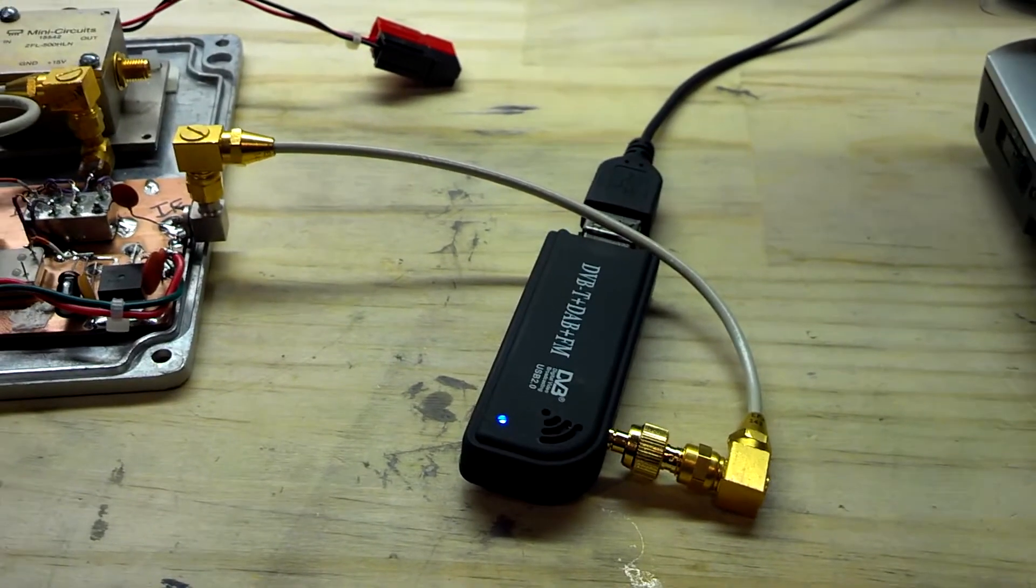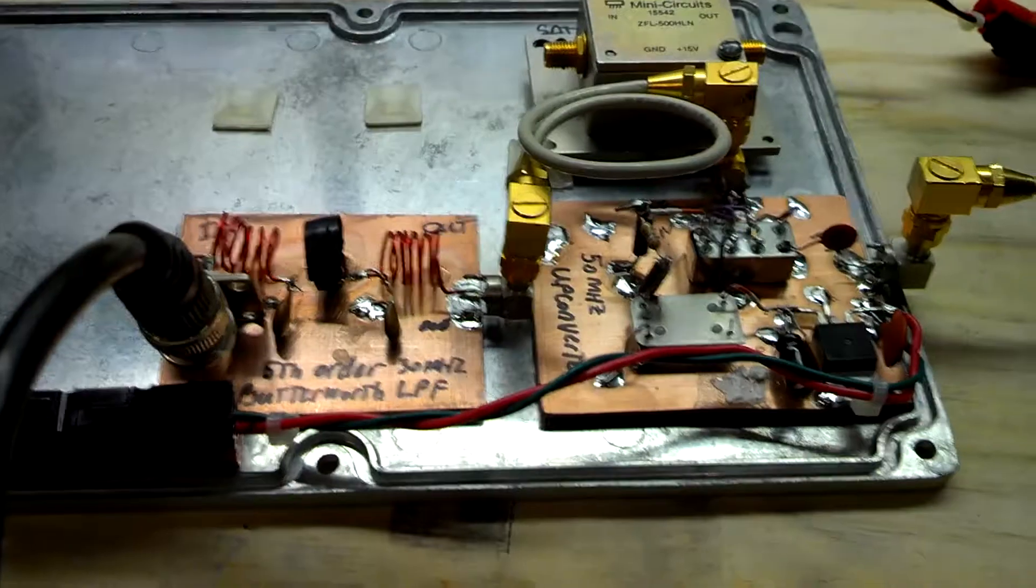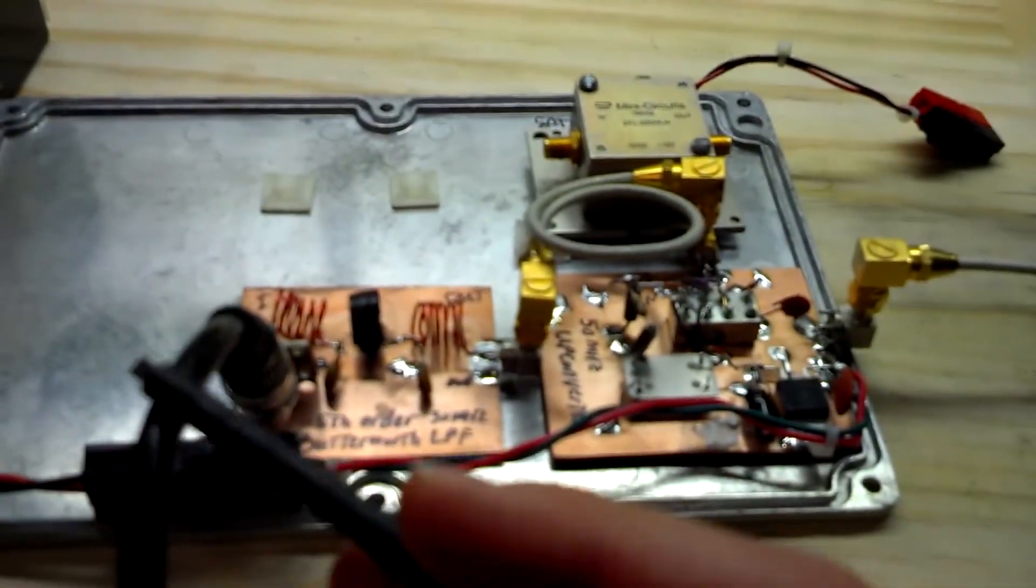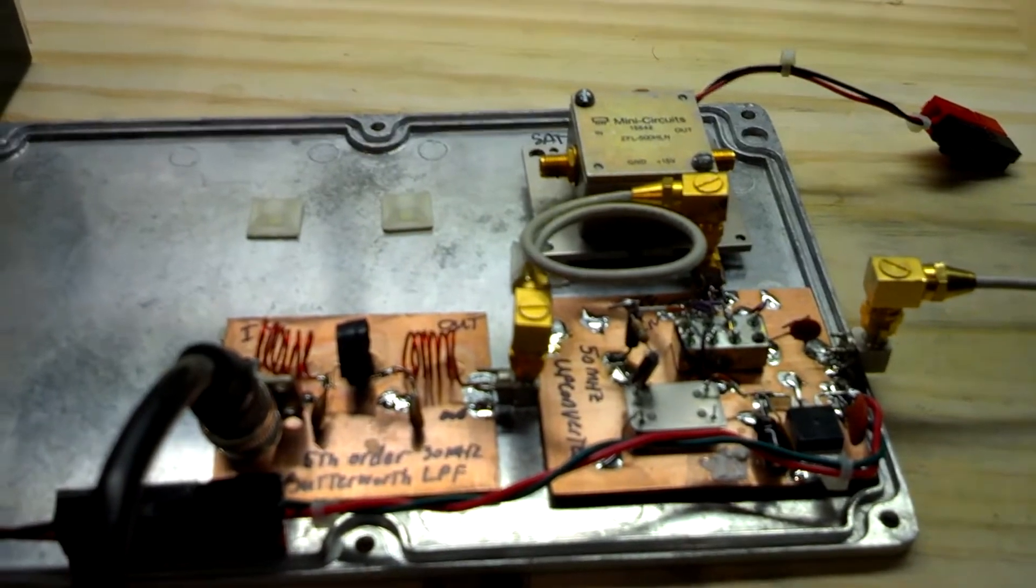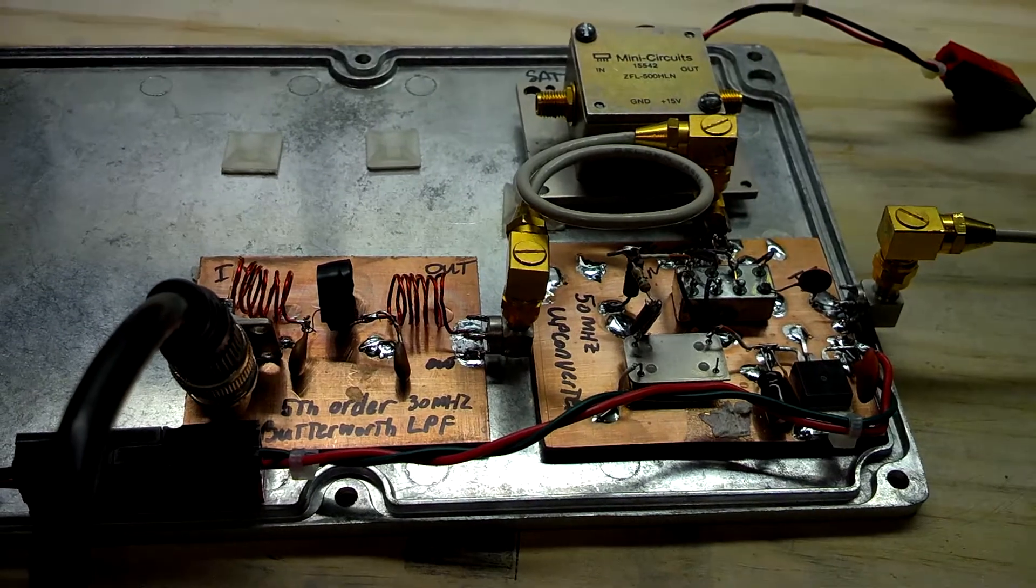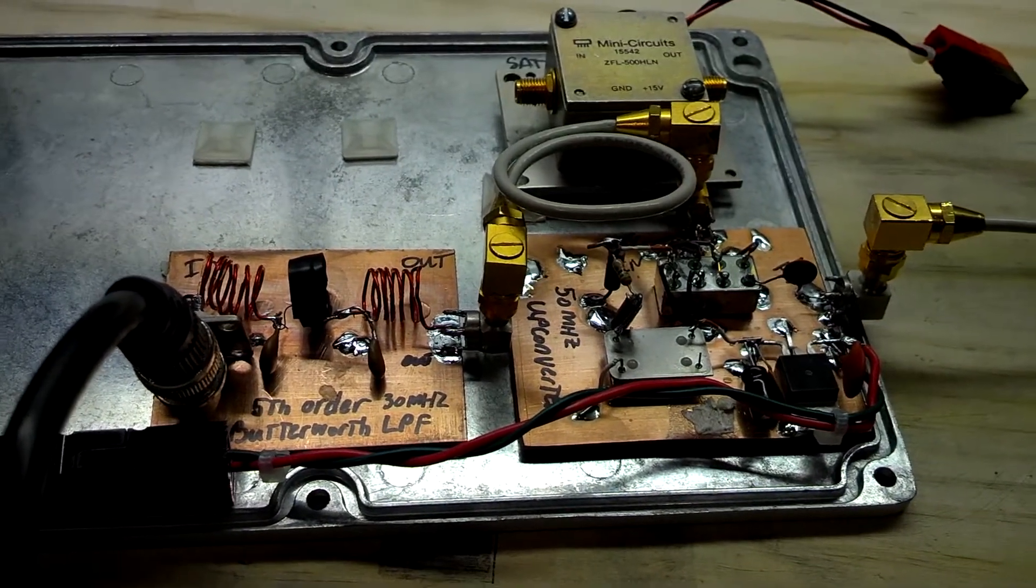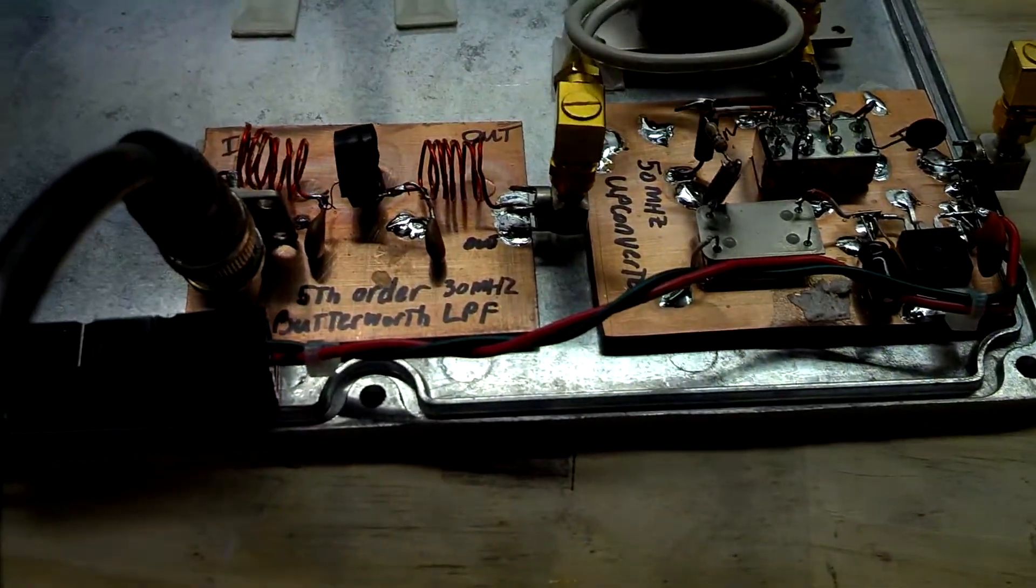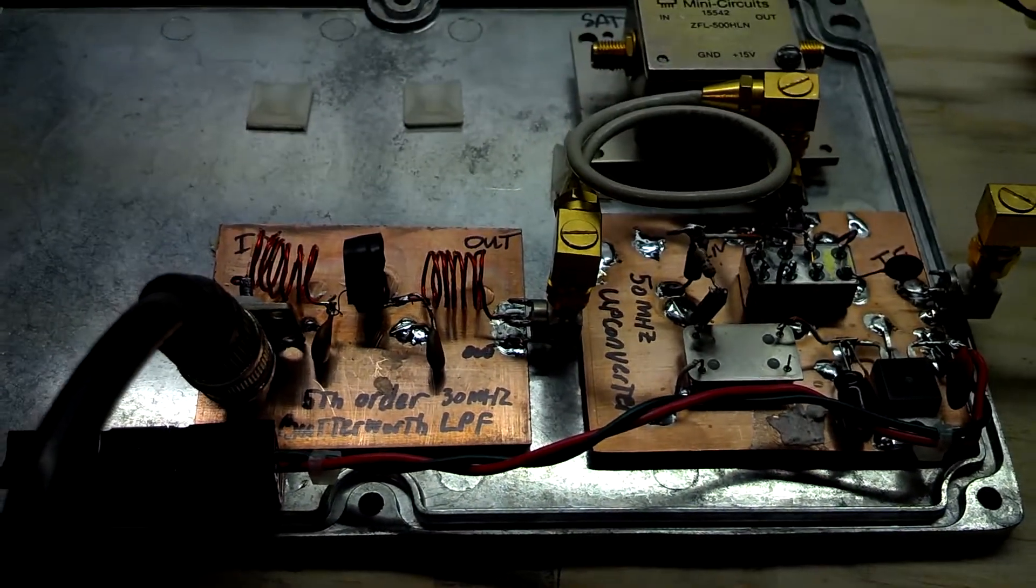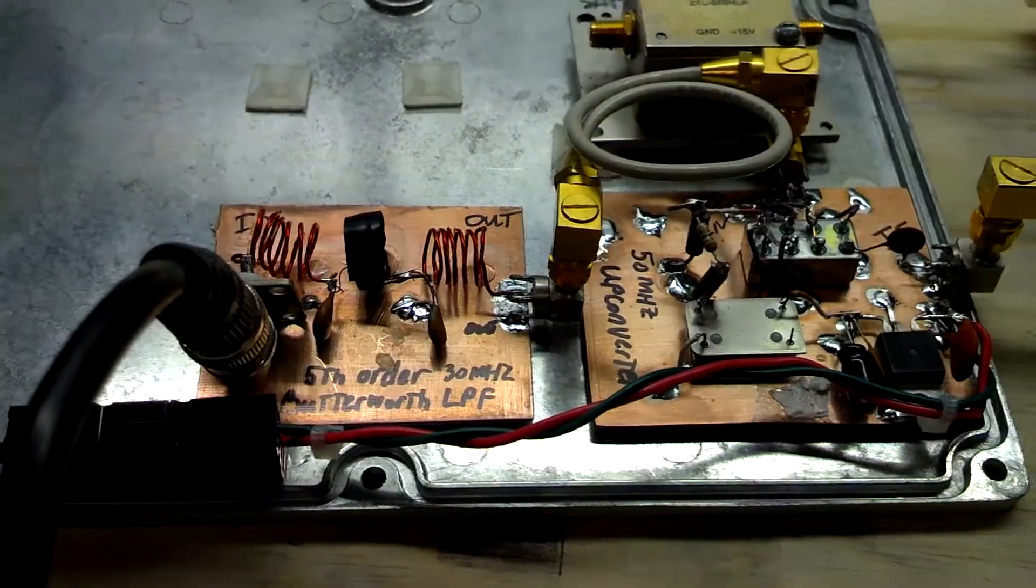So what I've done is I've built a simple upconverter. Right here we have the HF radio coming in from a large antenna outside, a wire antenna, and it's going through a low pass filter. It's a fifth order Butterworth 30 megahertz low pass filter. It keeps the wideband FM stations out, you know, local music stations. They're quite strong so they end up playing havoc with the radio.